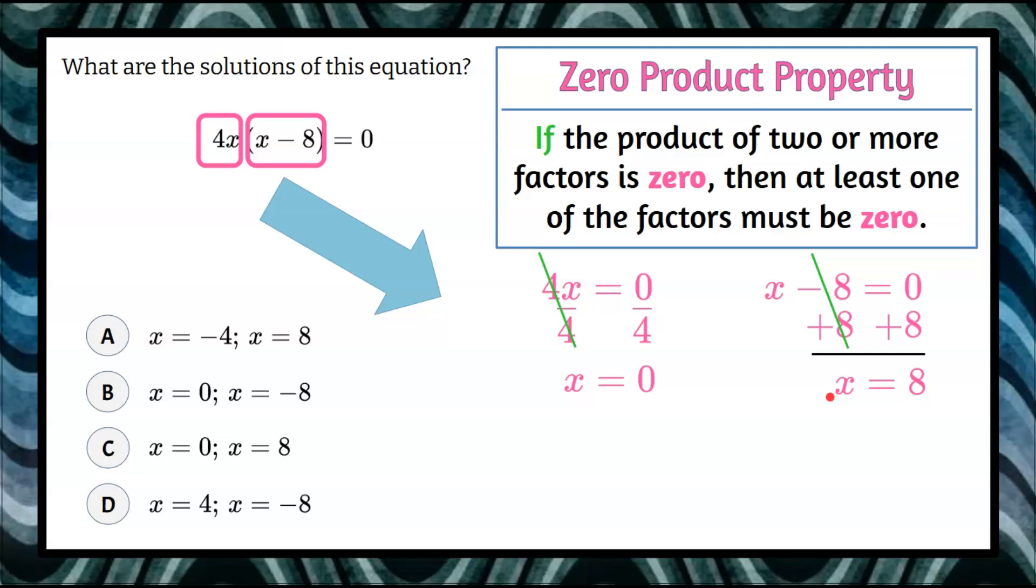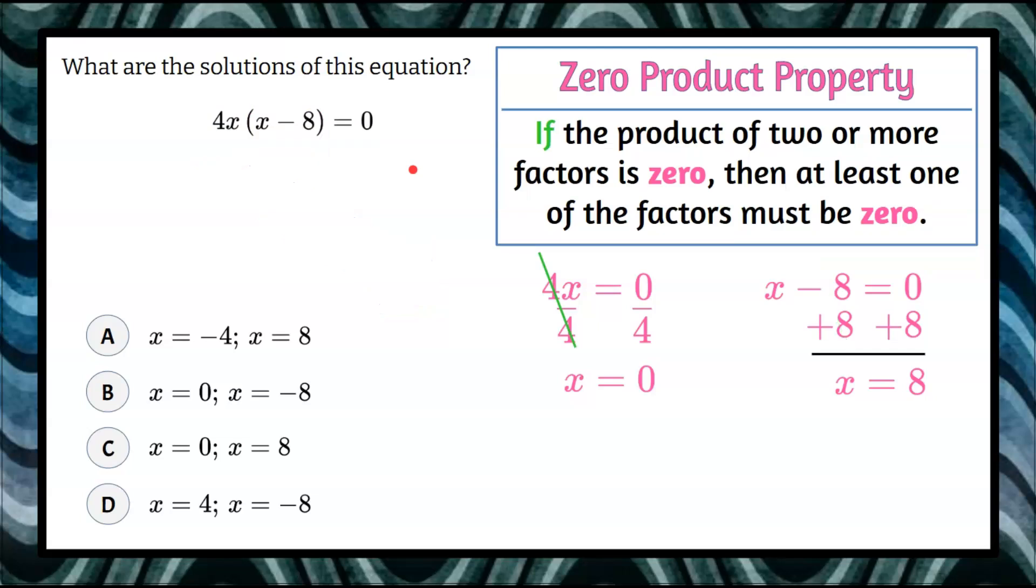Now we want to check if those are actual solutions of this equation. We'll take this value, x equals 0, and replace x with 0 to see if it makes the equation true. Let's rewrite that, putting 0 in for x: 4 times 0, 0 minus 8.